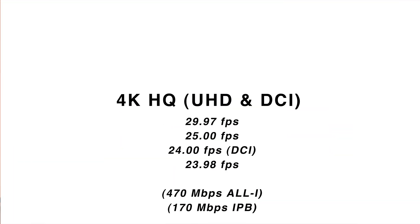The next one is called 4K HQ or 4K Fine, depending on whether you're looking at it in the camera or in the specs — it's the same thing. Basically, it's 8.2K oversampled footage downscaled to 4K resolution. In short, it's a really good way to get a very high-quality shot. This resolution works in 24, 25, and 30 frames per second only — no other modes. You can shoot this in both IPB and All-I.